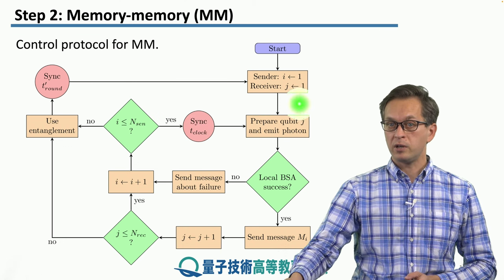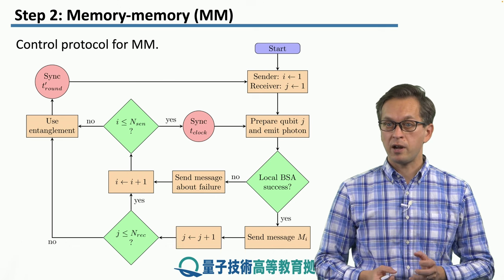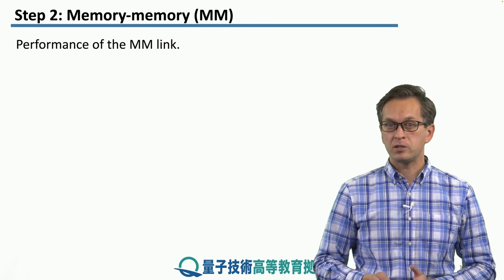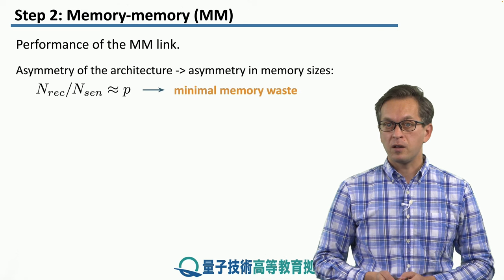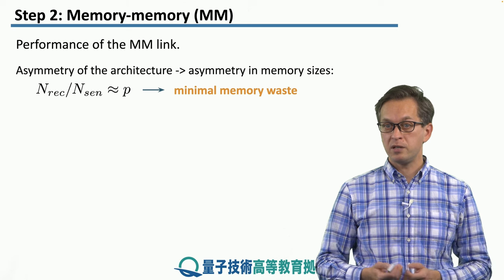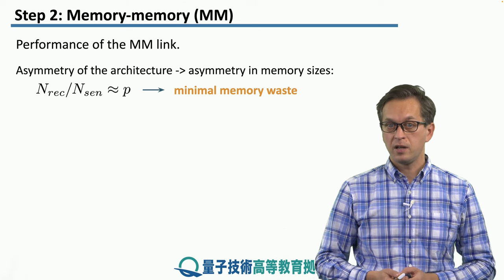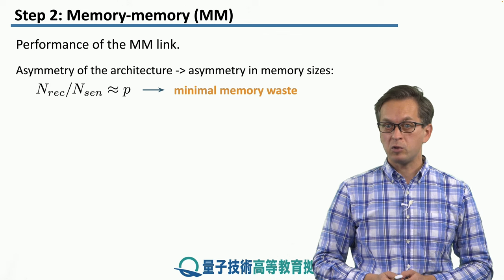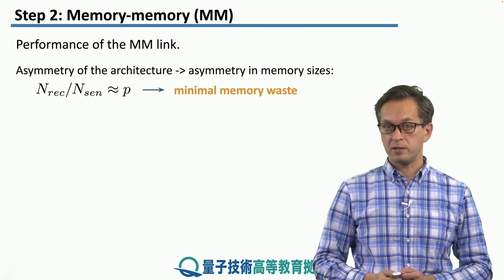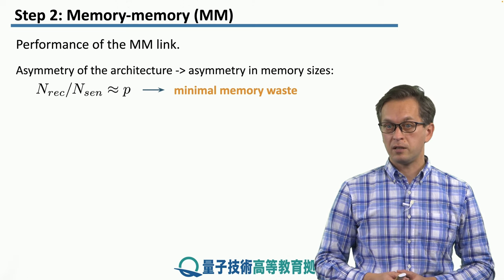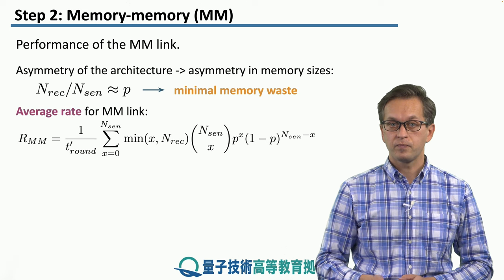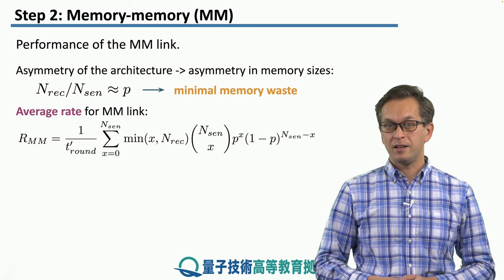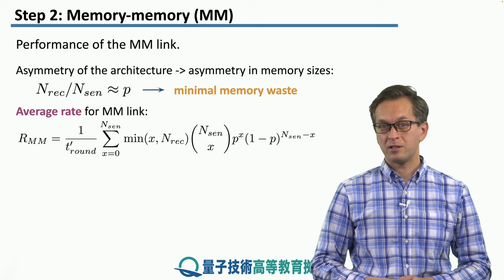This is where the magic happens — the memories at the receiver end are trying to entangle with the memories from the sender end. To measure the performance of this link, for the best performance, we have to assume an asymmetric number of memories, given by the asymmetric structure of the architecture. The average rate for an MM link is a lot more complicated than for the MIM architecture, so let's break down what it means.